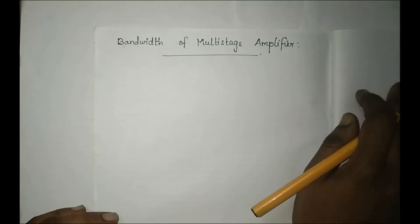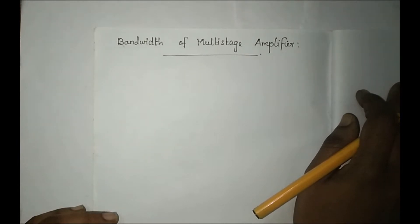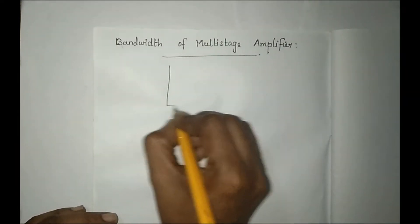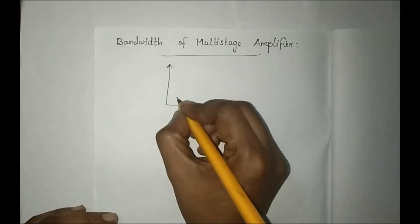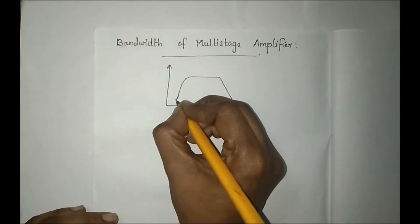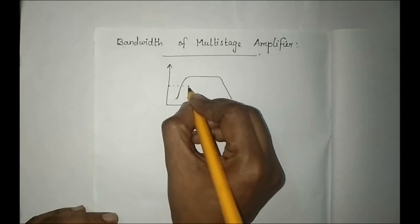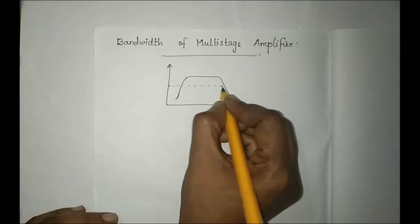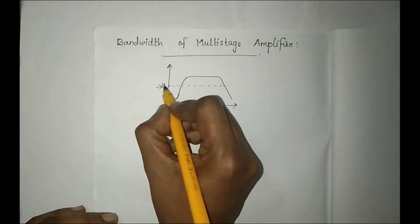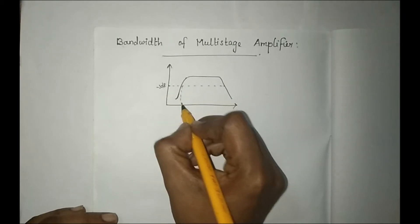Welcome friends. Now we are going to talk about bandwidth of multi-stage amplifier. So bandwidth — this is the frequency response, and the general expression of frequency response. Here, this is the cutoff frequency, that is the frequency at minus 3dB drop. So this is the cutoff frequency.